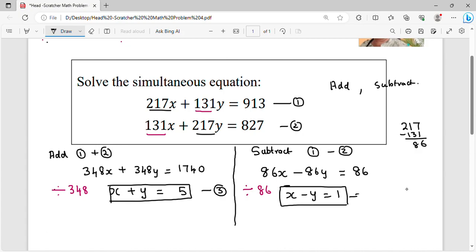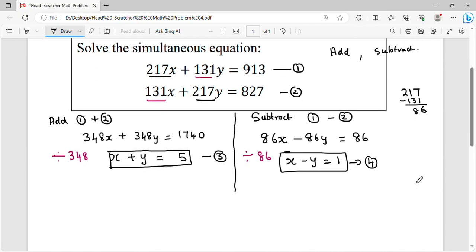Now once you convert this, it becomes a very simple simultaneous equation and you could handle this. So you need to know this trick. All of you have to have some tricks in your bag so that you could unleash this trick. So let's add equations 3 plus 4. I would get x plus y plus x minus y is equal to 5 plus 1. The y's will get cancelled, 2x is equal to 6, or x is equal to 3.